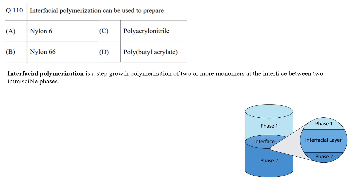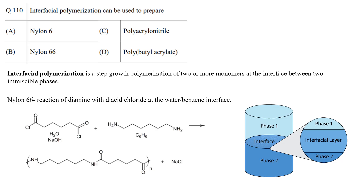Since the polymer forms at the interface, that means two different monomers having highly reactive functional groups are participating in the polymerization. In the given options, only Nylon-66 is synthesized from two monomers; the rest of the polymers are synthesized from single monomers.